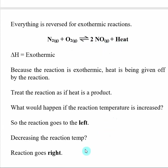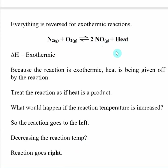Likewise, if I decrease the reaction temperature, the reaction is going to shift in the direction that produces heat, so that's to the right. As we go to the right, we use up nitrogen and oxygen, we make NO, but we also produce heat. So if I decrease the reaction temperature, the reaction shifts in the direction that produces heat.